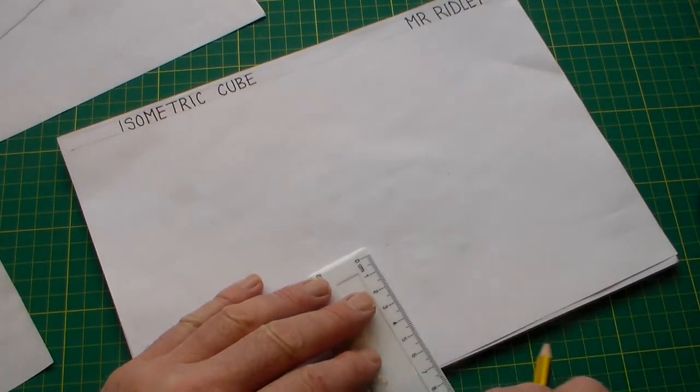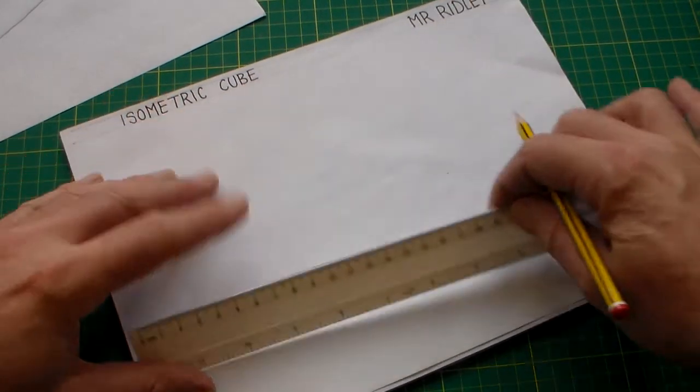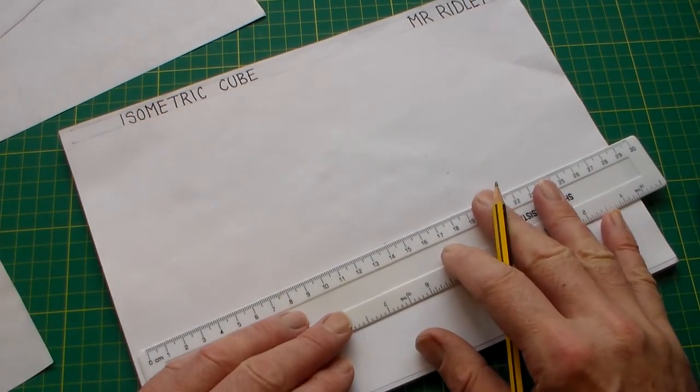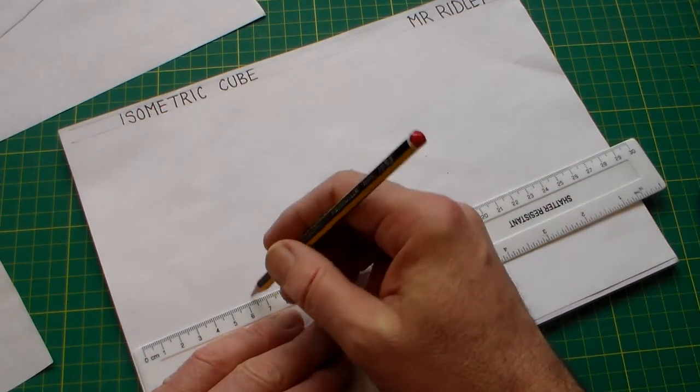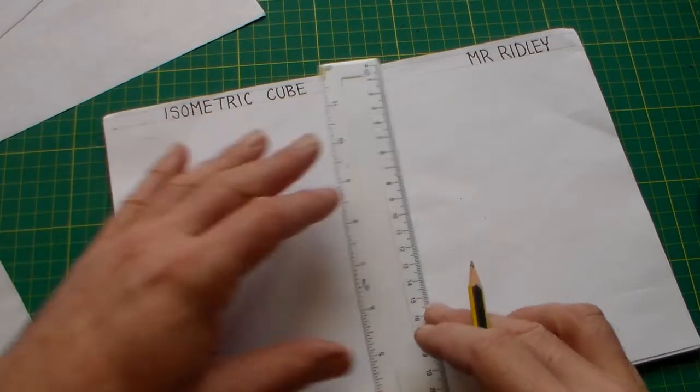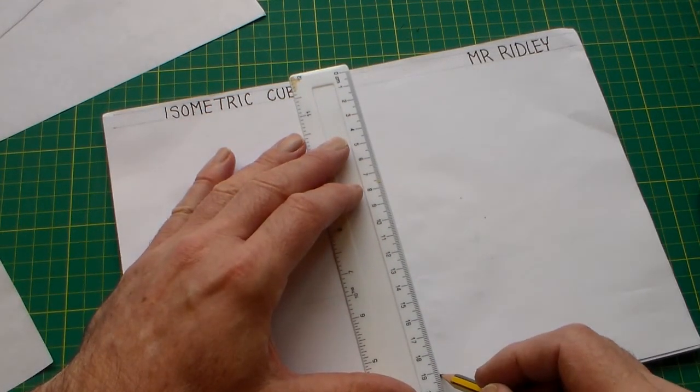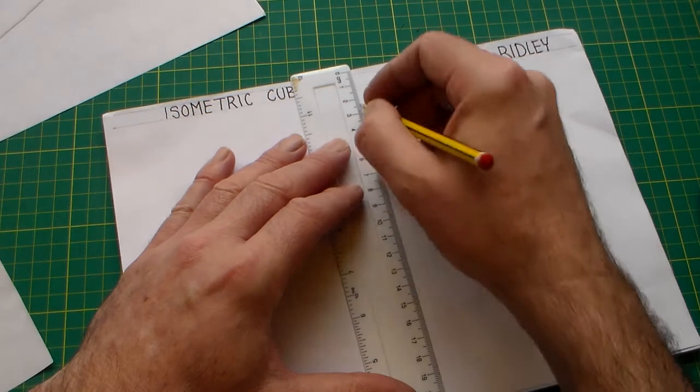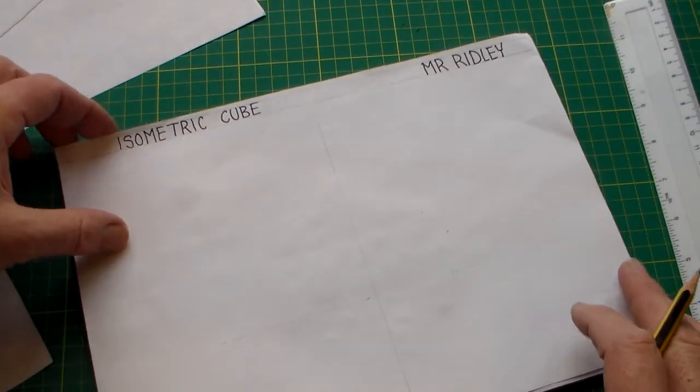Then you can use a ruler or you can draw it by hand very lightly because we're drawing construction lines here. We're going to draw a line there, so we're drawing a horizontal line, and then now I'm drawing a vertical construction line.